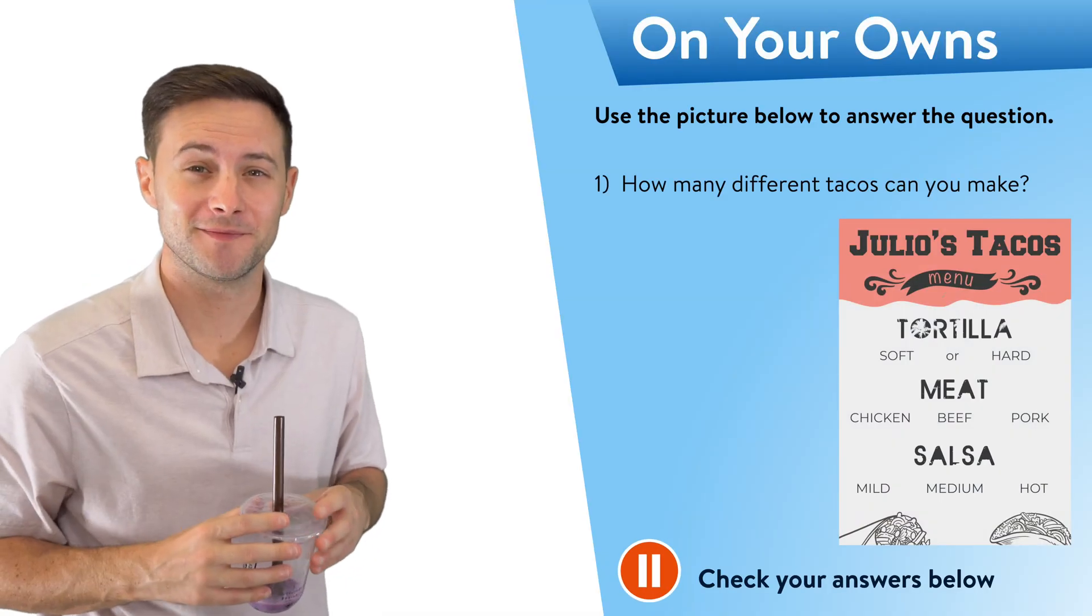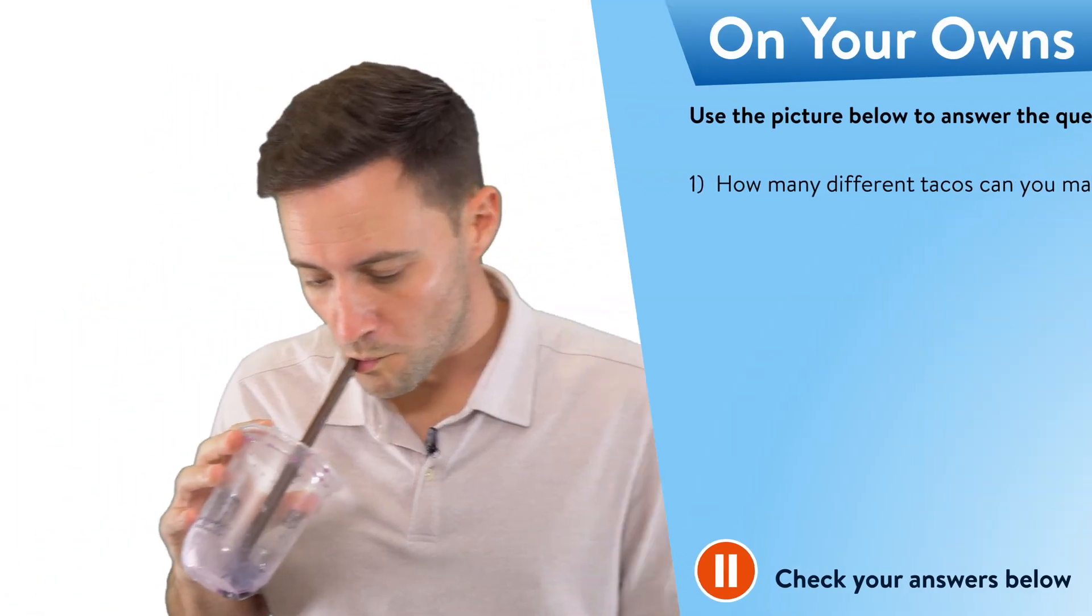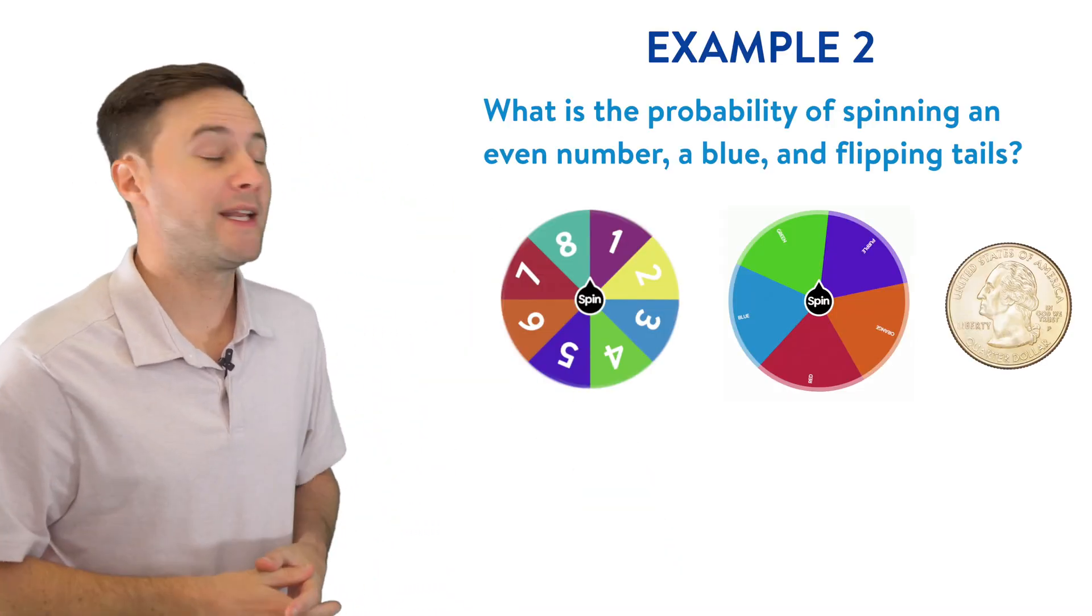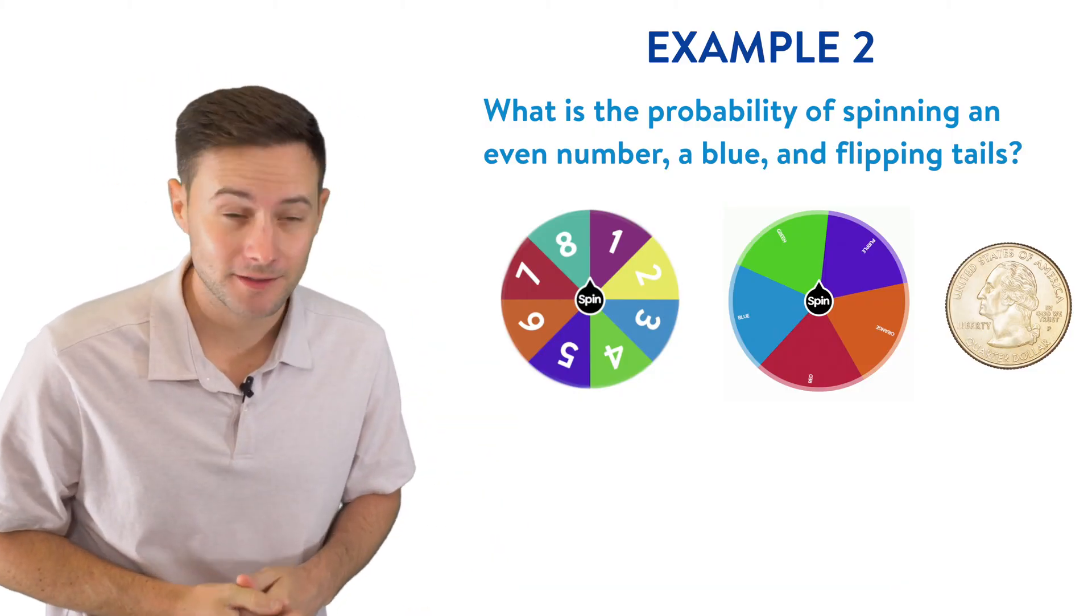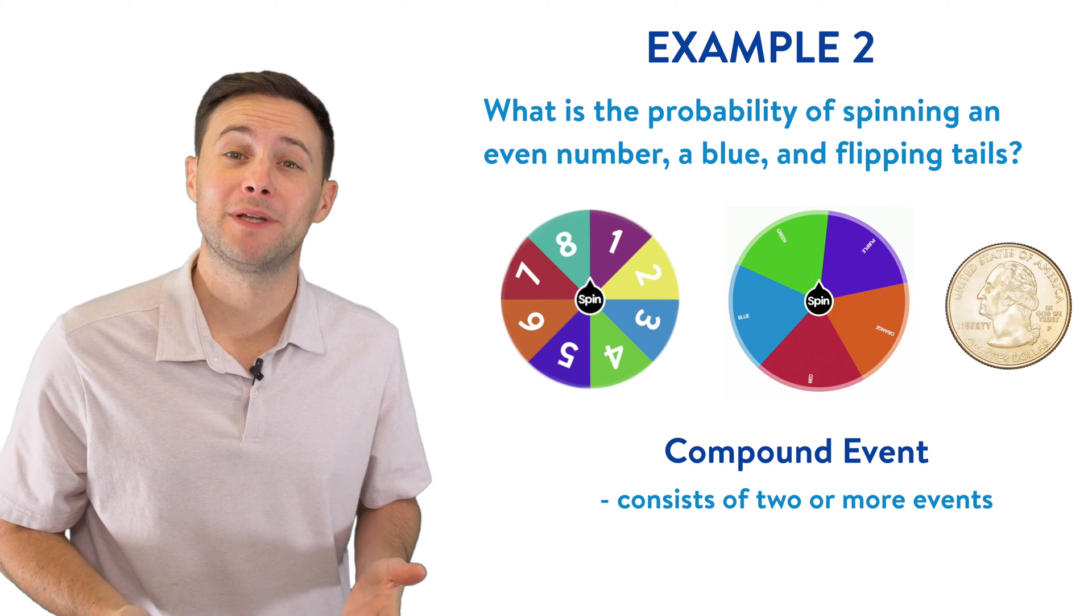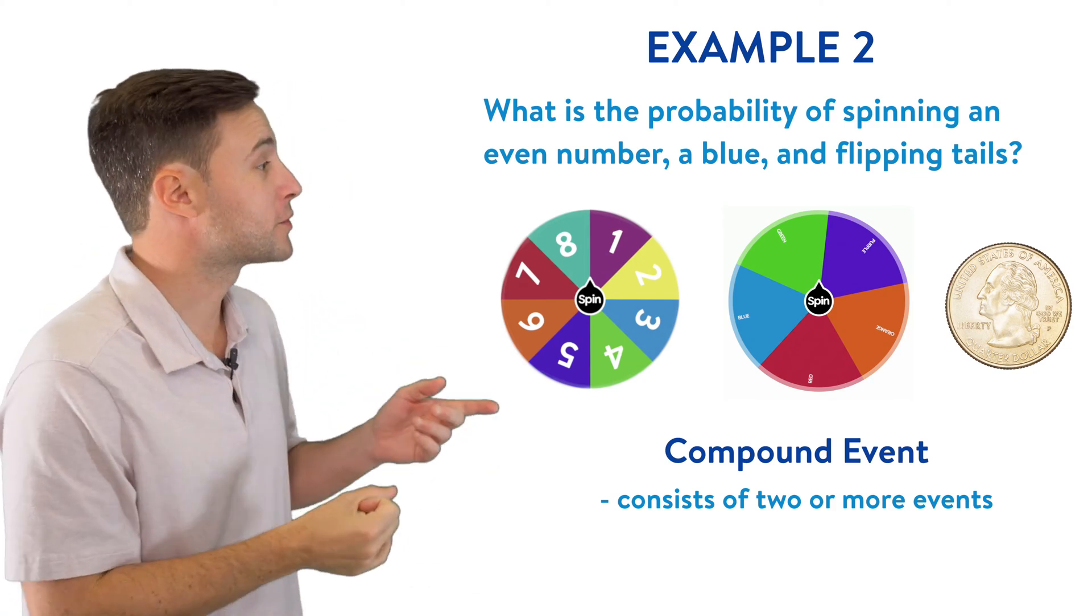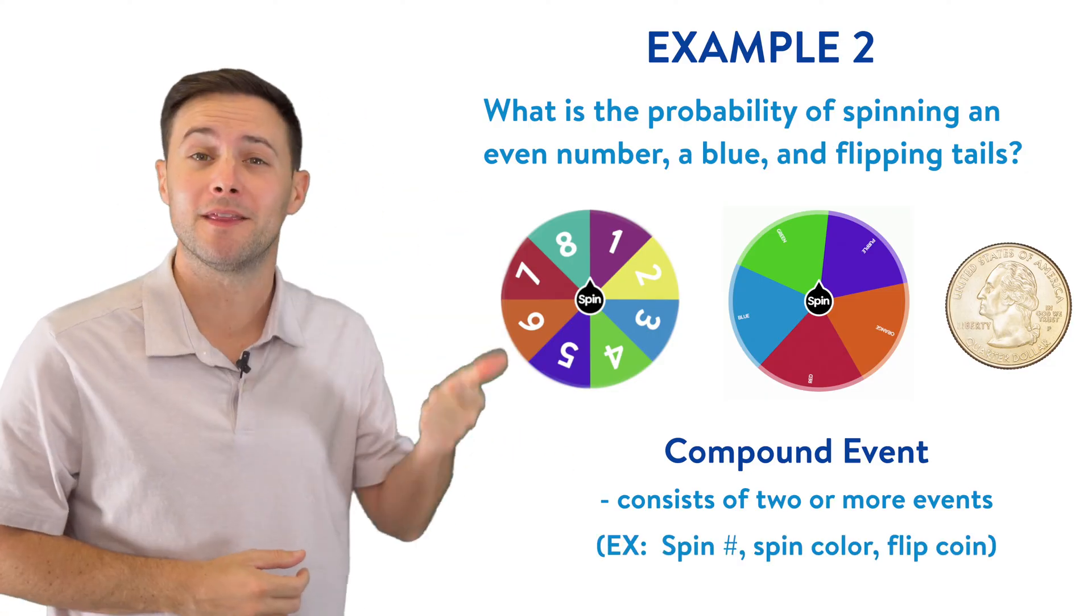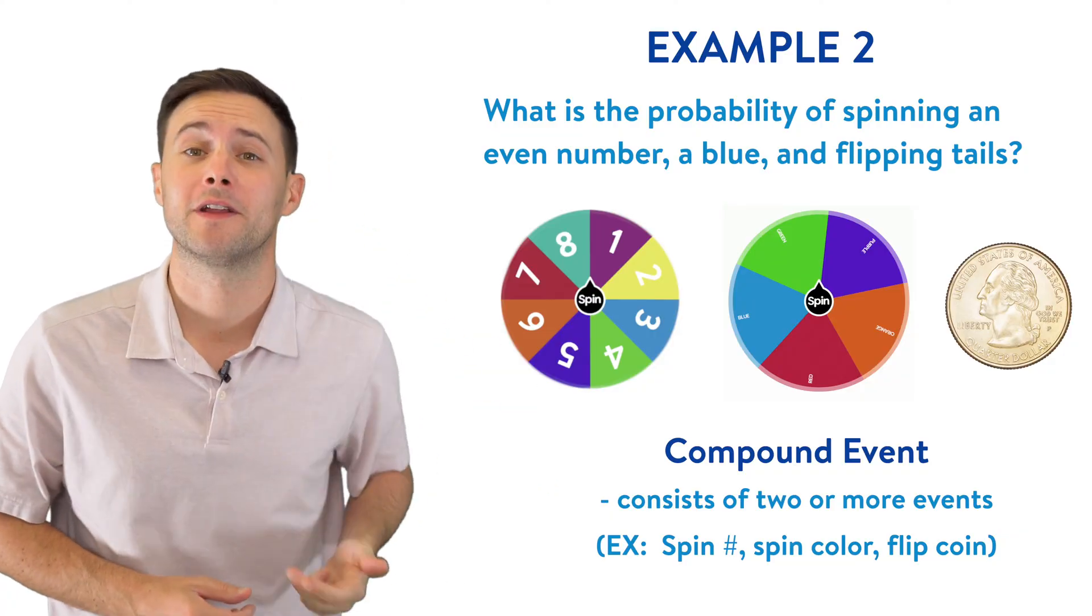Example two. What is the probability of spinning an even number, a blue, and then flipping tails? So this is a compound event because it consists of three different events. First, we're going to spin the numbered spinner, then we're going to spin the colored spinner, and then lastly, we're going to flip a coin. So three different events.